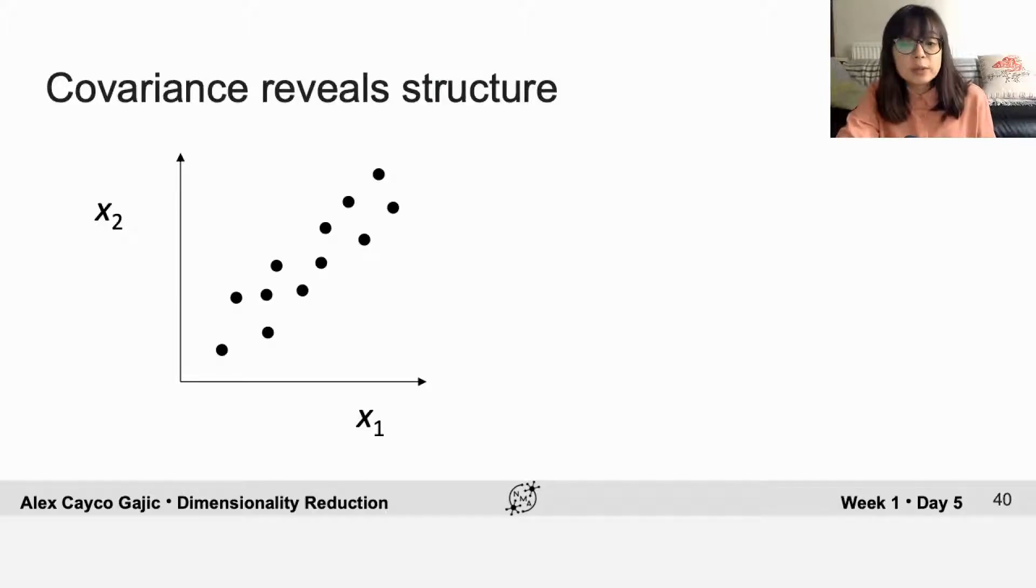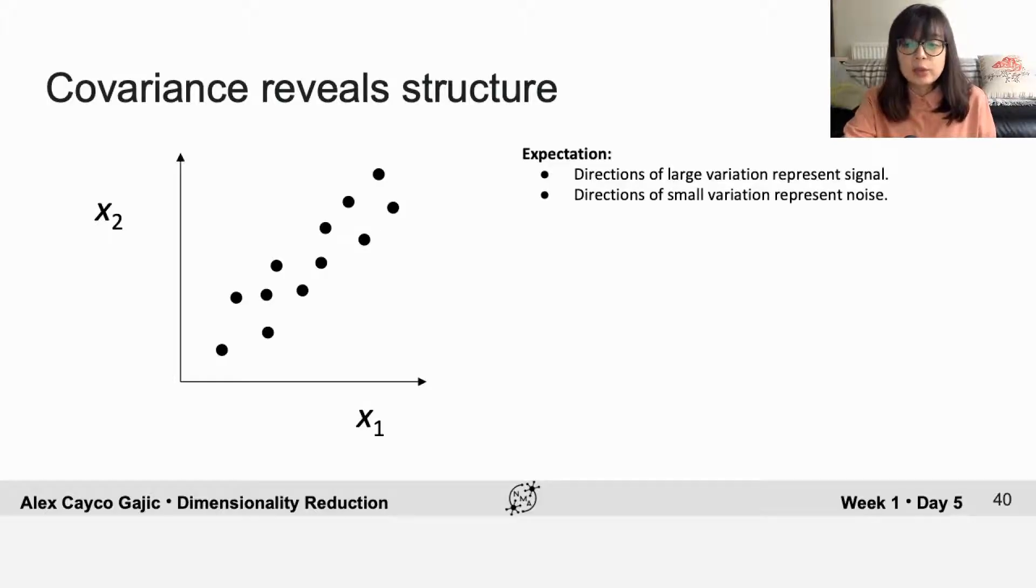We saw in previous lectures that much of the structure of the data can be revealed by the covariance. We might expect that directions with large variation probably represent signal or other interesting features, whereas directions of small variation probably represent measurement noise. The goal of PCA is to find these directions of maximum variance and use them to form the new orthonormal basis to represent your data.